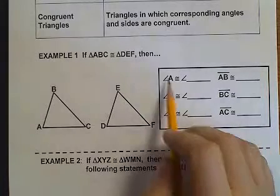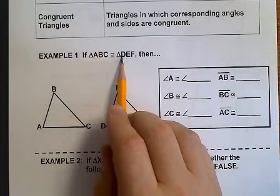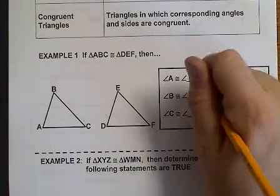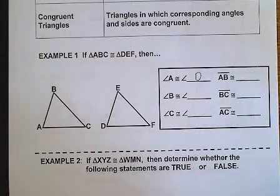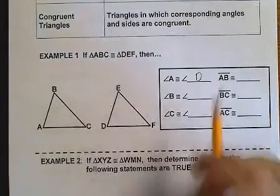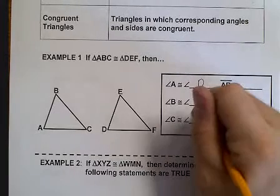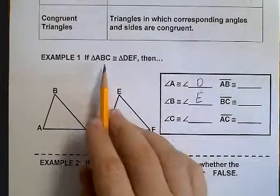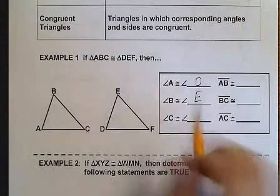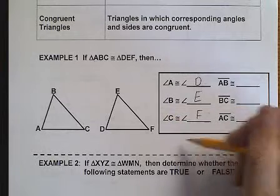So angle A would be congruent to angle D. A is the first letter, D is the first letter. B is the one in the center, E is the one in the center. C is on the end, F is on the end. So these are the congruent angles, the corresponding angles.